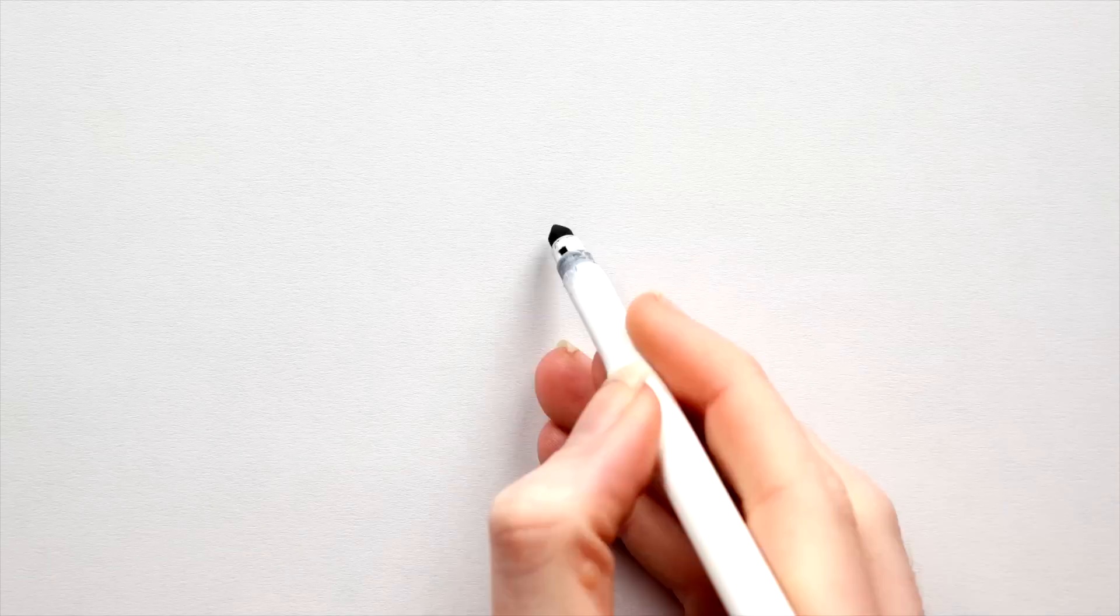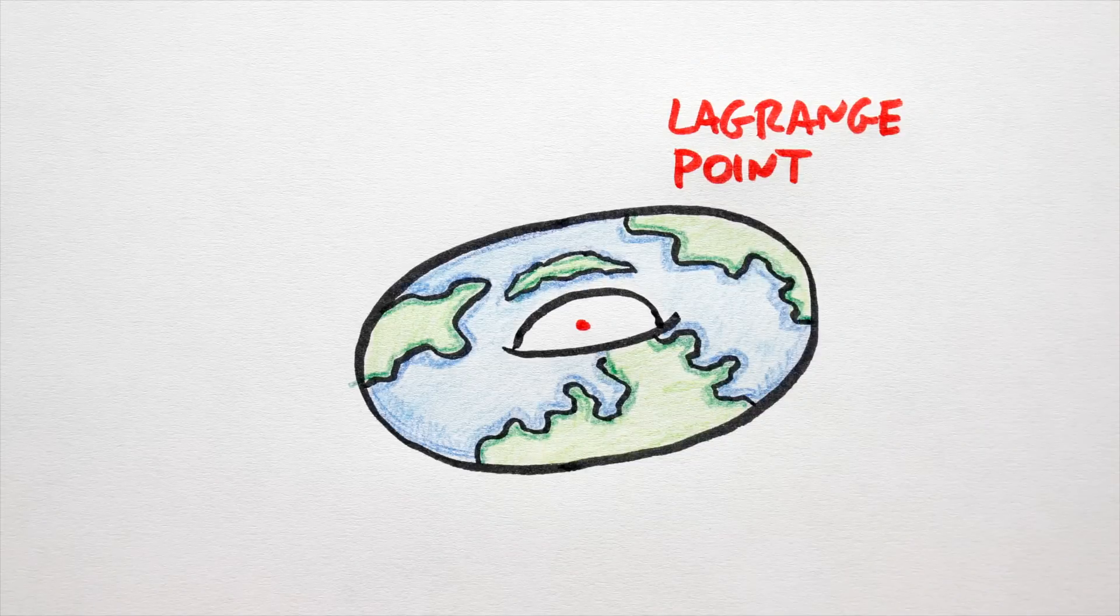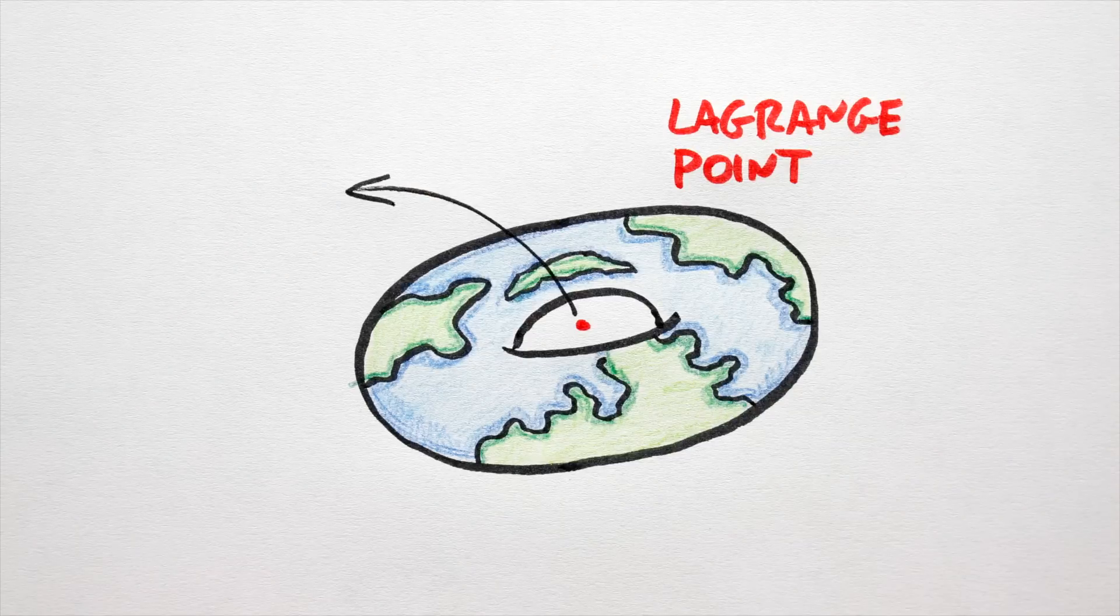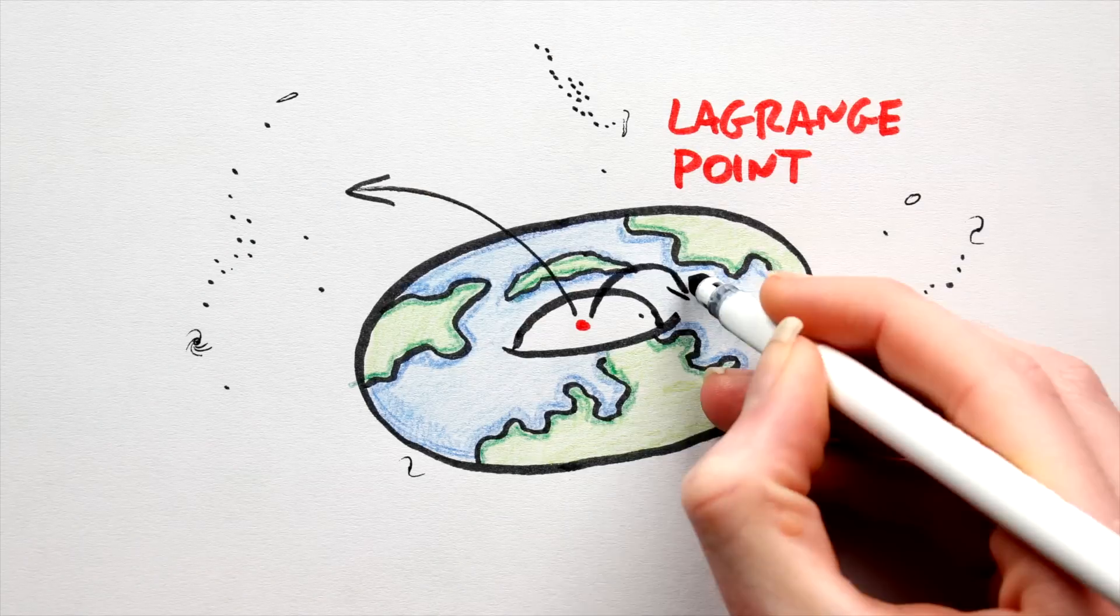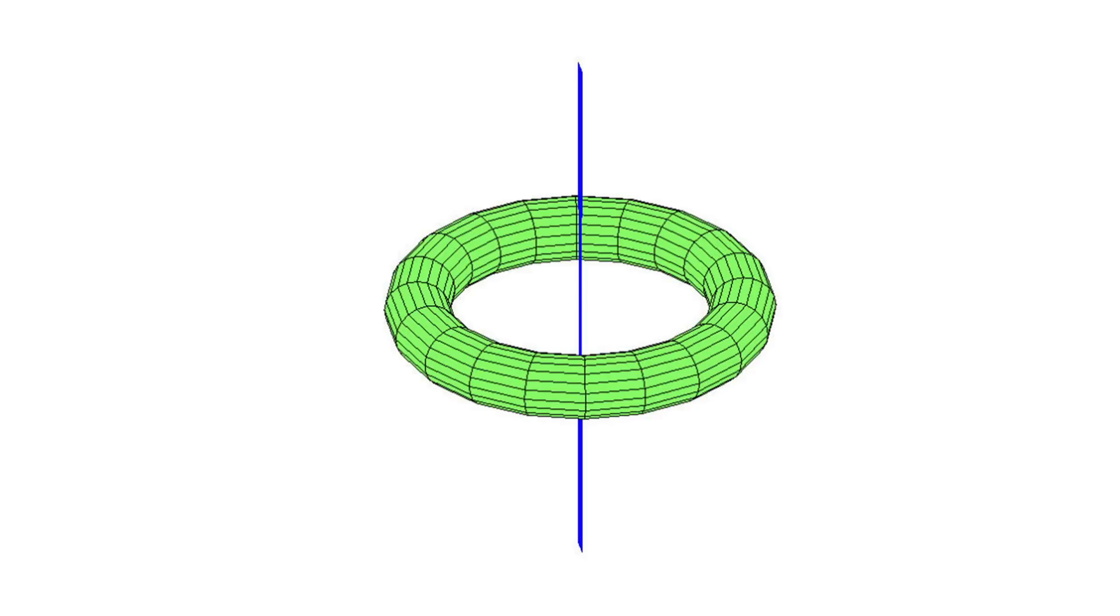Okay, let's talk moons. There is a Lagrange point in the centre of the hole. Unfortunately, it's unstable. Place a moon there and the slightest gravitational tug would send it flying off into space or crashing into the surface of the planet. Not great, eh? Now, in theory, a moon could bob up and down through the centre of the hole.